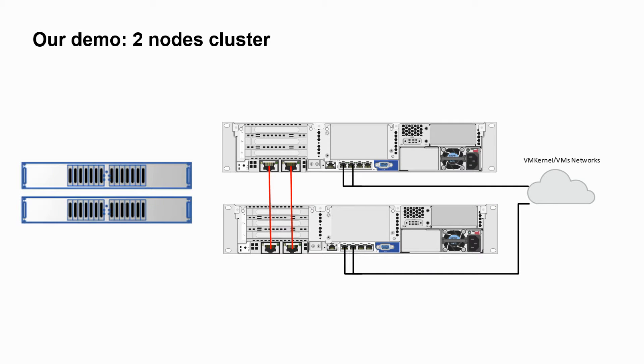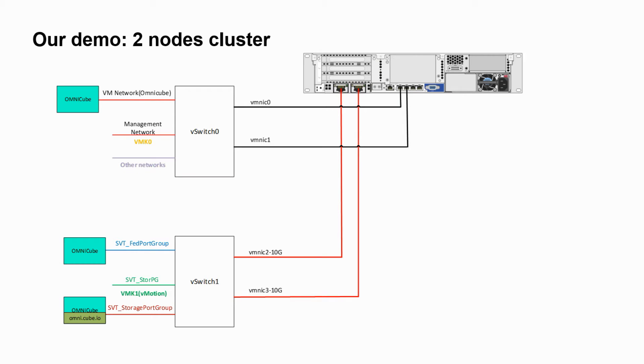In our demo, we have two SimpliVity nodes connected to each other directly via a 10GB storage network and a 1GB management and virtual machine network.